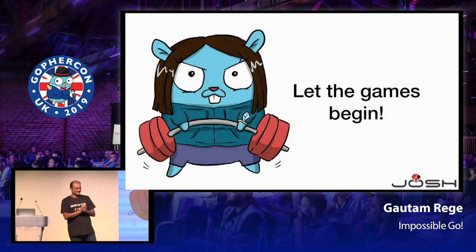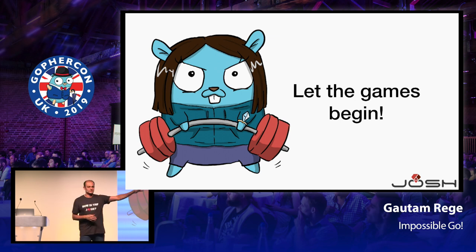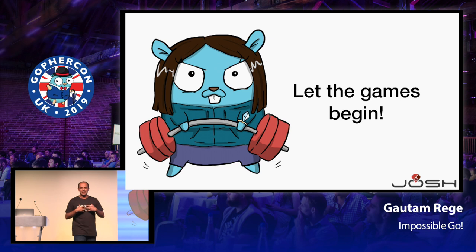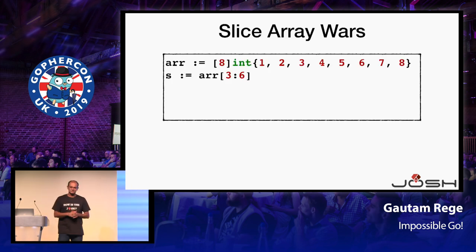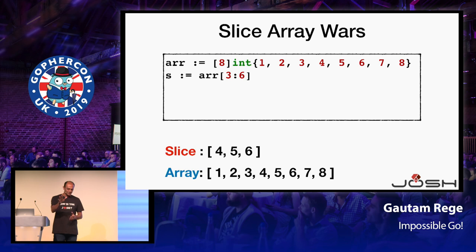Are we ready? I'll build up the tempo slowly and we'll start with some easy, simple examples. The problem with giving such a talk is that I have a completely varied audience — there might be somebody very new to Go, and there are people who've been there thinking 'what is this joker talking about?' But if every one of you has at least one 'aha' moment, my aim is achieved. Simple stuff first: I have an array of eight elements and I'm taking a slice out of it.